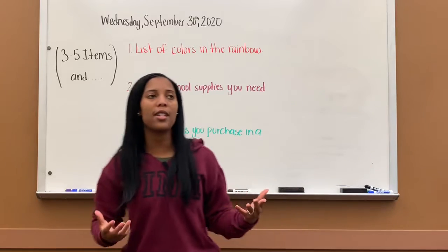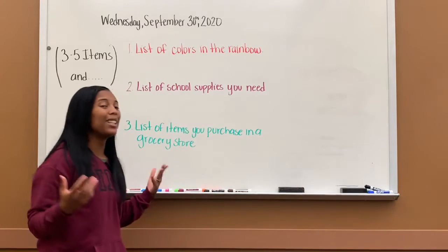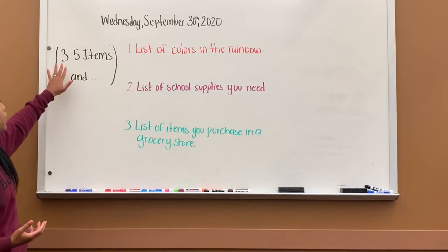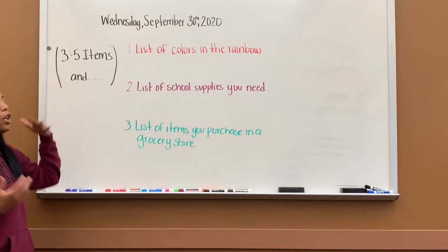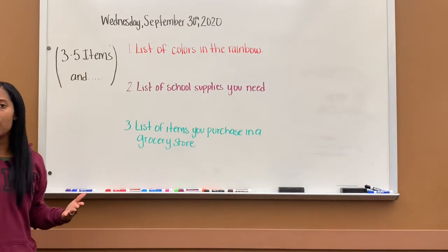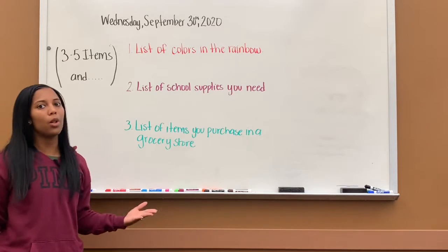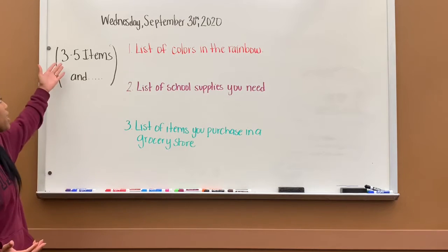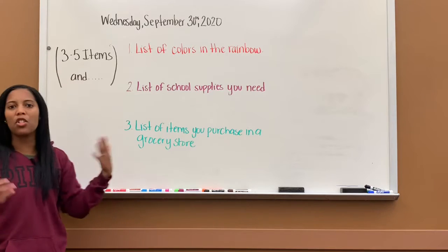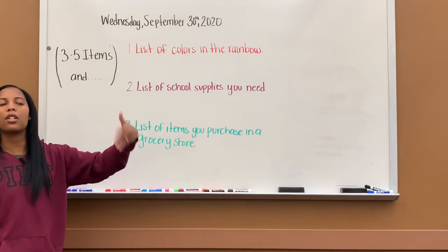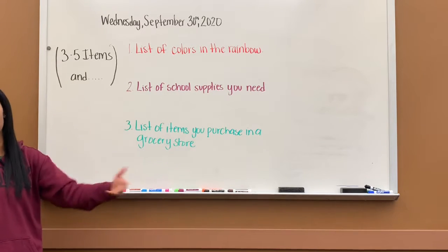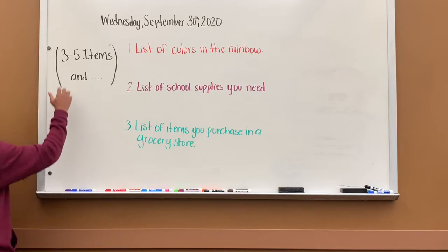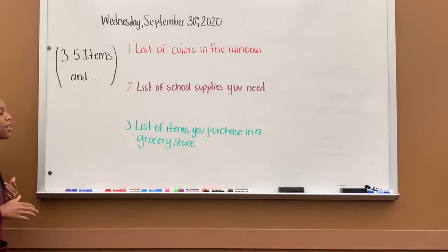Whenever you do your sentences and you're listing your items, make sure that you do between three and five. You don't want to do only two because you don't need a comma between two, so three is good. And five is just a little too much — it can become a run-on sentence. So you want to list between three and five items.